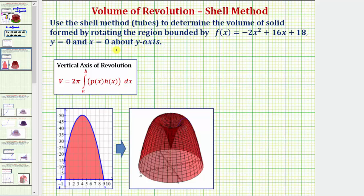So let's first focus on determining the bounded region. We know that f of x is a quadratic function and because a is negative it opens down. So this is the graph of f of x.